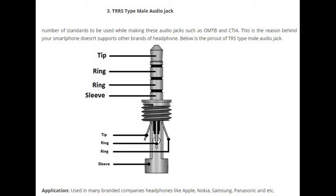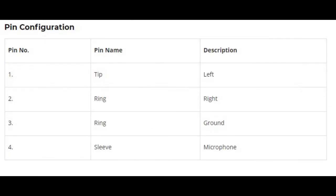The third type is TRRS — tip, ring, ring, and sleeve — meaning there are two rings. Nokia, Samsung, Panasonic, and Apple use different types of these connectors in mobile phones, and you will also see them on some Dell and HP laptops. This hybrid slot supports an internal microphone, but if you are doing a web chat and want to use an external microphone instead, you need this type of male connector. There are two different standards: OMTP used by Nokia, and CTIA used by Apple, Samsung, Panasonic, and MI. For TRRS: tip is left audio, first ring is right audio, second ring is ground, and sleeve is microphone.